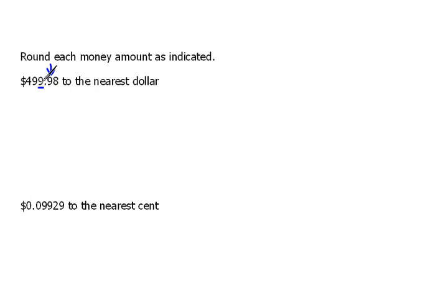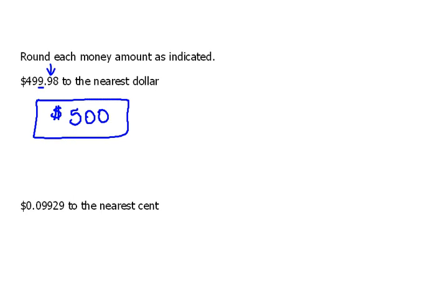If we round this digit up, it becomes a 10, which affects the next digit and rounds it to a 10, which affects the next digit and rounds it to a 5. So rounded to the nearest dollar, that would be $500. If you think about it, it makes sense — $499.98 is only 2 cents away from being $500. It's pretty darn close.